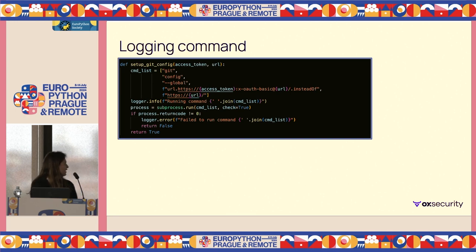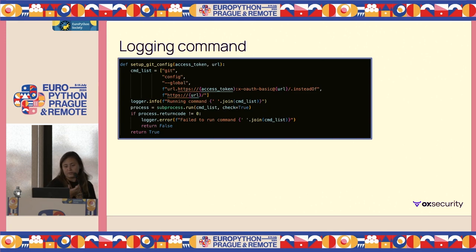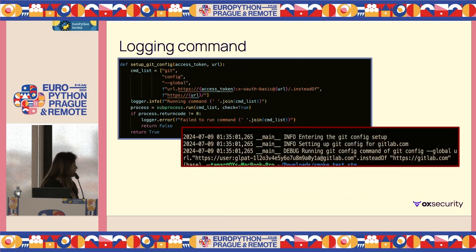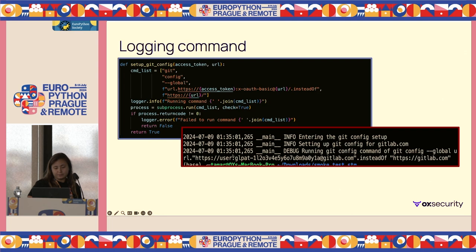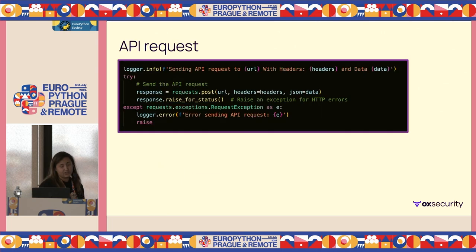Let's go over the first example. Here we can see a function trying to configure a connection to some source control — GitLab, GitHub, anything like that. You're using a git config command and replacing the URL. The thing that can happen here is that when you're logging which command you're running, you're actually exposing the actual token for the GitLab you're using.